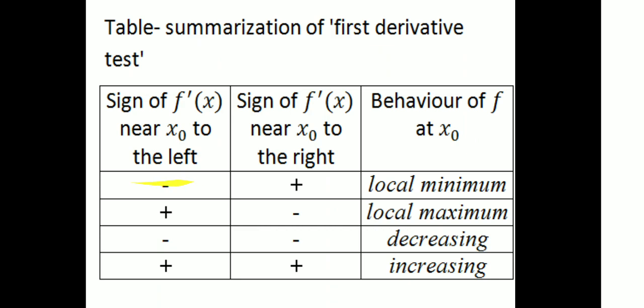Examining the sign of f' near x₀: on the left side and on the right side of x₀. If the sign changes from negative to positive, it is a local minimum. If the sign changes from positive to negative, it is a local maximum. Negative to positive means minimum; positive to negative means maximum, corresponding to decreasing then increasing and increasing then decreasing.